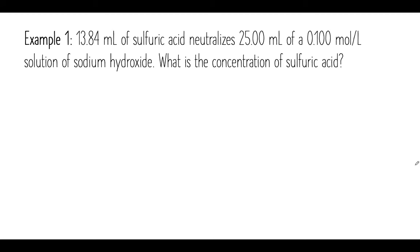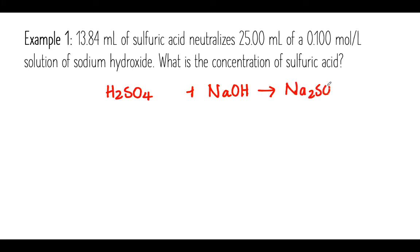Now let's take a look at a calculation for a titration problem. This is actually nothing new — we've seen these when we did stoichiometry. So we have sulfuric acid reacting with sodium hydroxide: H₂SO₄ + NaOH. Since this is a neutralization reaction, it produces Na₂SO₄ + H₂O. Balancing this equation gives us a coefficient of 2 in front of NaOH and 2 in front of H₂O.